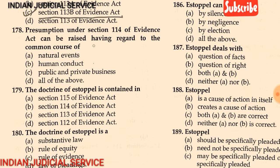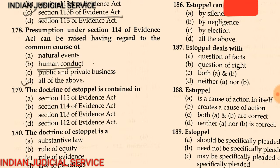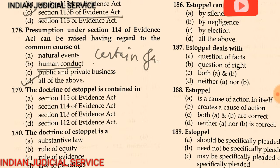Question 178: A presumption can be raised having regard to — (A) the common course of natural events, (B) human conduct, (C) public and private business, (D) all of the above. The answer is: all of the above. Section 114 provides that the court may presume the existence of certain facts — these include natural events, human conduct, and public or private conduct.